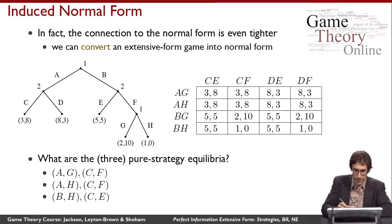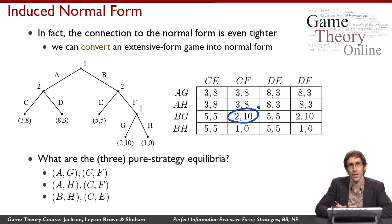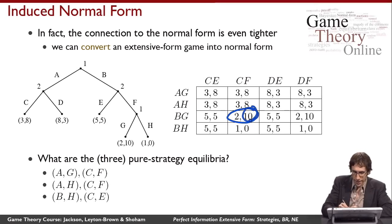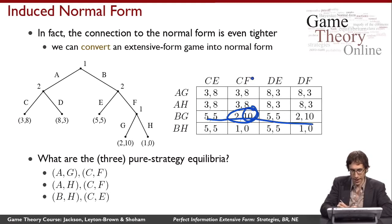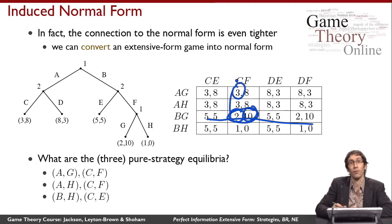In contrast, consider a strategy profile that isn't an equilibrium. Player two indeed can't do better than 10, so CF is a best response to BG for player two. However, player one could deviate from BG to AG and get a payoff of three instead of two. So BG is not a best response to CF for player one, and therefore this is not a Nash equilibrium.